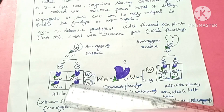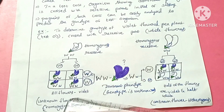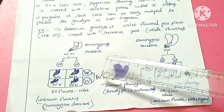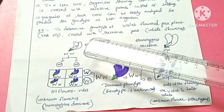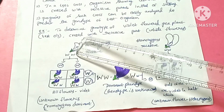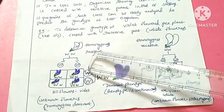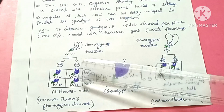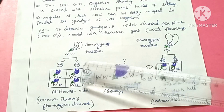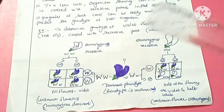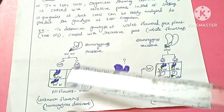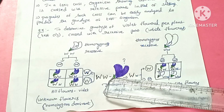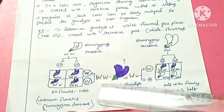If the test plant is homozygous dominant, its genotype is capital W, capital W. The recessive parent has genotype small w, small w. The gametes produced are capital W fused with small w in all combinations, resulting in all heterozygous dominant offspring. That is why we get all purple color flowers, confirming that the test organism genotype is capital W, capital W — homozygous dominant.